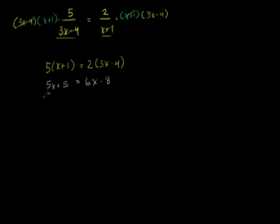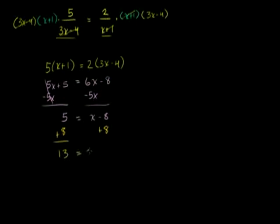If we subtract 5x from both sides, the left-hand side just becomes 5. The right-hand side is left with x minus 8. Now we add 8 to both sides: the left-hand side becomes 13, and the right-hand side is just x. So x is equal to 13.